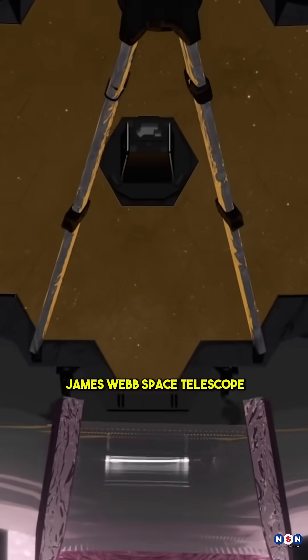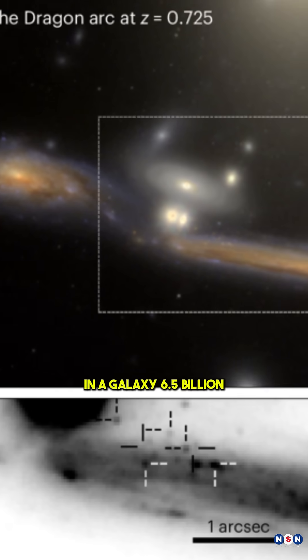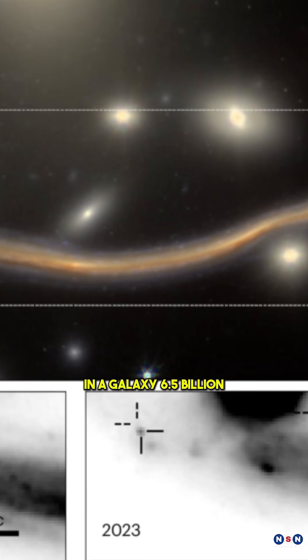Did you know that the James Webb Space Telescope recently made a groundbreaking discovery? Scientists have identified over 40 individual stars in a galaxy 6.5 billion light-years away.